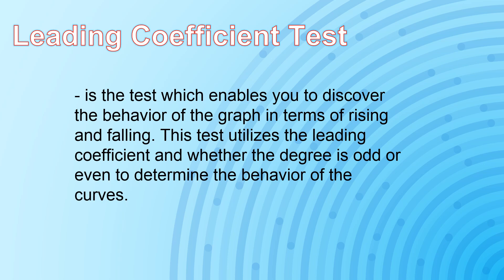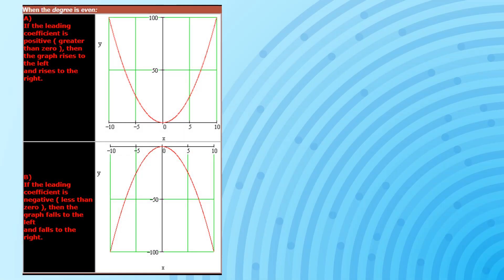So this is what the leading coefficient test tells. If the degree of a given polynomial is even and that even degree is accompanied by a positive leading coefficient, the graph will behave by rising on the left side and also rising on the right side. But if that even degree is accompanied by a negative leading coefficient, it will behave by falling on the left side and falling on the right side as well.